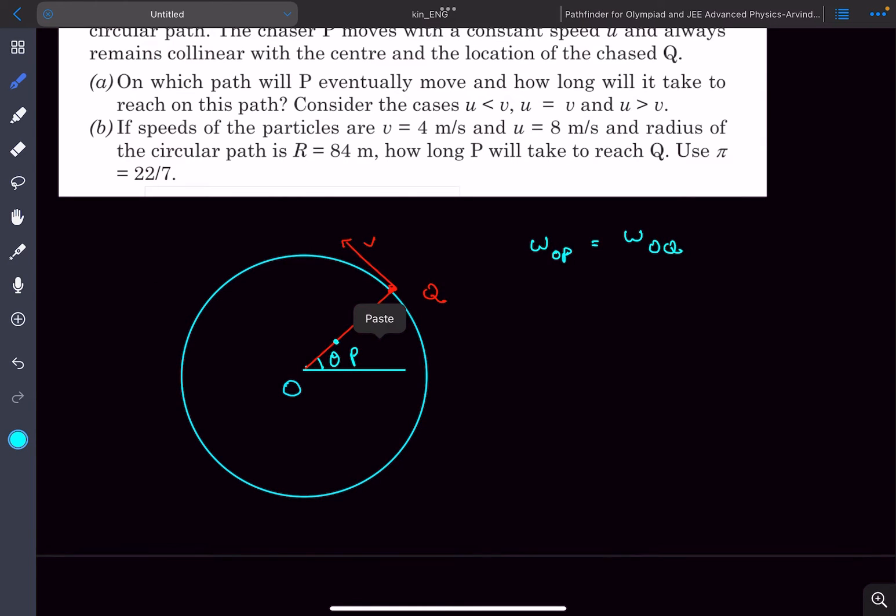So this particle P would have two components of velocity. One is going to be perpendicular to it, in the theta direction, let's say it's u_theta. And one is going to be in the radial direction, let's say it is u_r. Omega of line OP, we can write it as u_theta divided by r, where r will be the instantaneous distance of this point P from O.